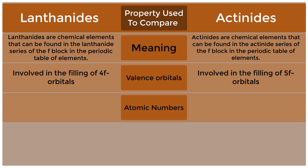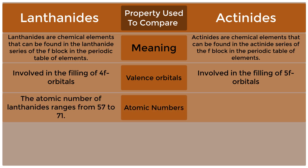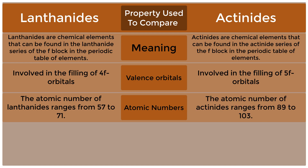Atomic numbers: The atomic number of lanthanites ranges from 57 to 71. The atomic number of actinites ranges from 89 to 103.